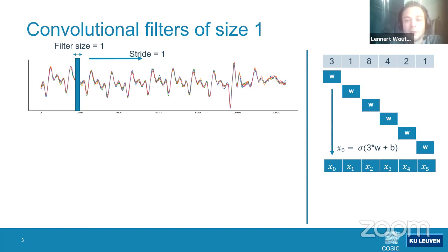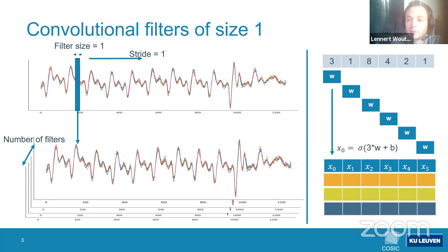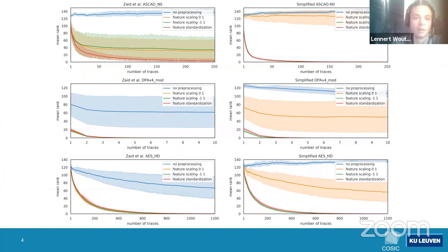The first convolutional block with filter size 1 simply learns a weight and bias, multiplying each sample by the same weight and adding the same bias — producing a scaled and shifted version of the trace. With four filters, you get four such representations of the same information, which did not seem very useful. We decided to remove this first layer and instead apply classical preprocessing widely established in machine learning.